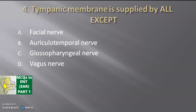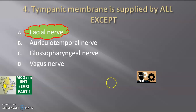Next, the tympanic membrane is supplied by all except — facial nerve, auriculotemporal nerve, glossopharyngeal nerve, or vagus nerve? Time starts now. My answer is facial nerve, so the facial nerve does not supply the tympanic membrane. The other three nerves supply the tympanic membrane.